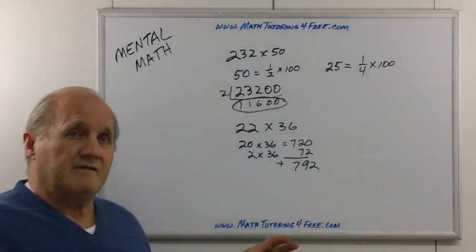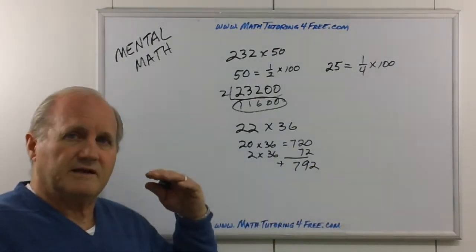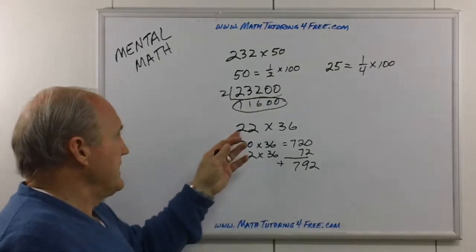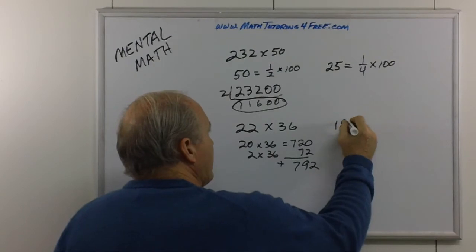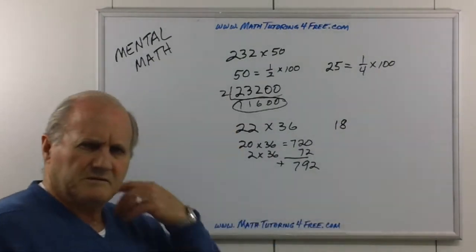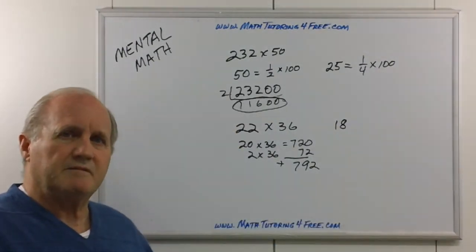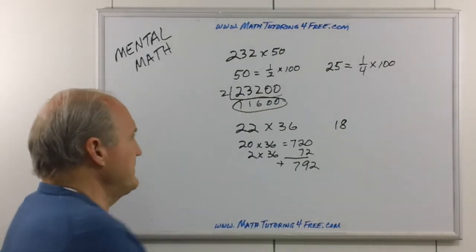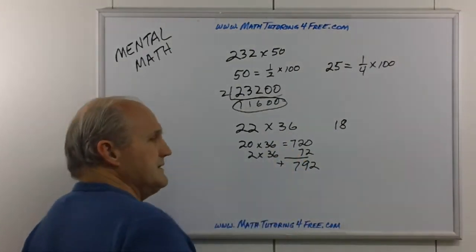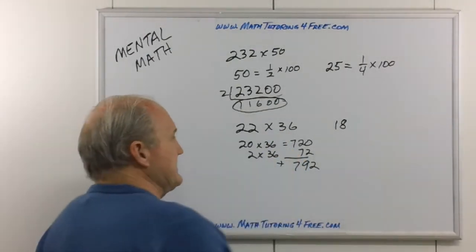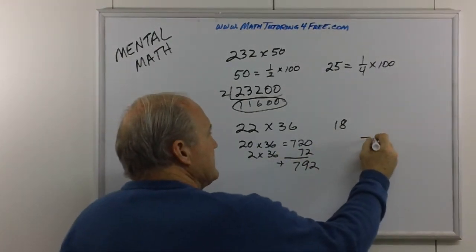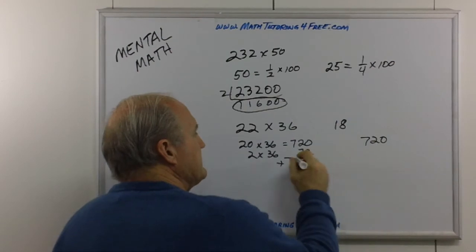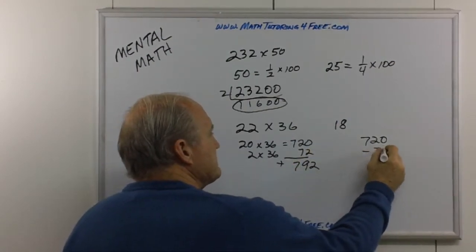Now, it took me time to write it down, but I'm sure you can see that you can do that in your head quicker. And other numbers similar to 22, how about 18? So, well, what's that? Well, that's 20 minus 2. So if we were to multiply the same number, 36 times 18, we'd still multiply by the 20, and we'd get 720, but now instead of adding the 72, we're going to subtract the 72.